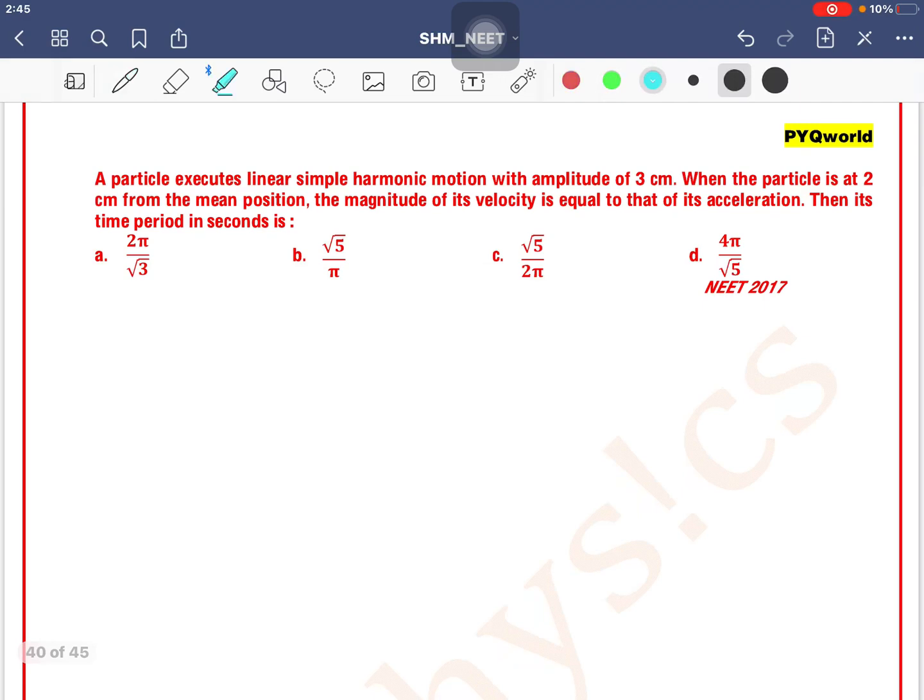A particle executes linear simple harmonic motion with amplitude of 3 cm. When the particle is at 2 cm from the mean position, the magnitude of its velocity is equal to that of its acceleration. Then its time period in seconds is: